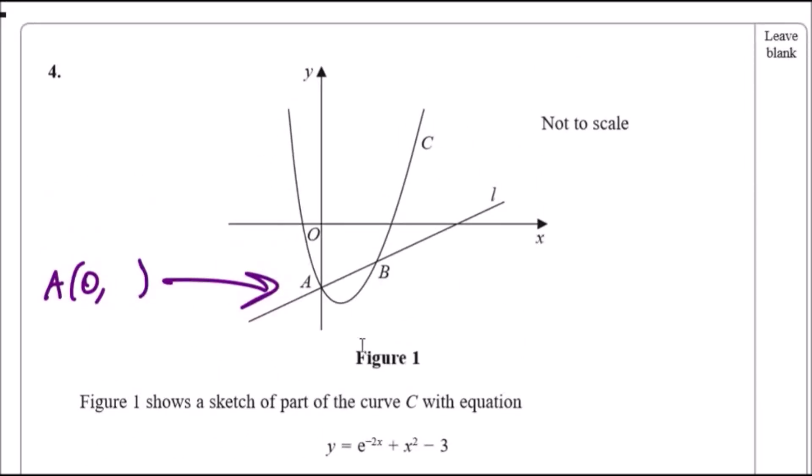We can see that this curve cuts the line at two points A and B. We can also see that at point A it seems to cross the y-axis, so we can guarantee that this point here has an x-coordinate of zero, because when something crosses the y-axis the value of x is always zero because it hasn't moved across.